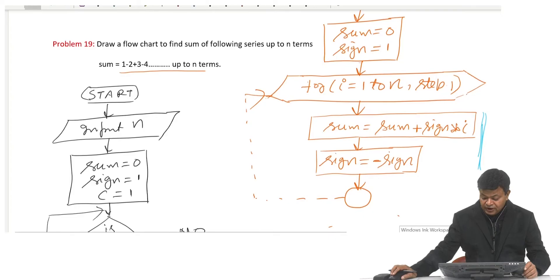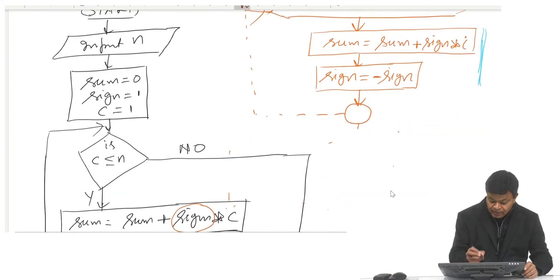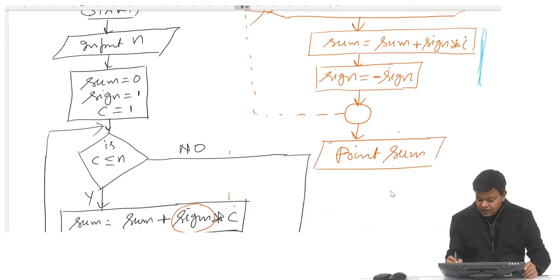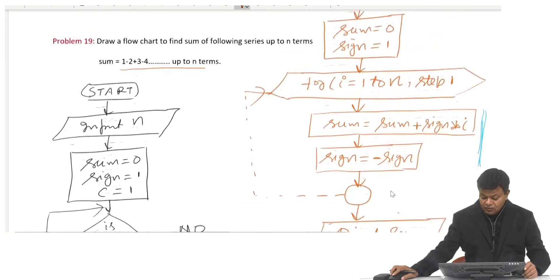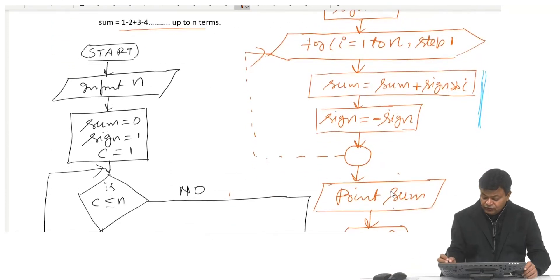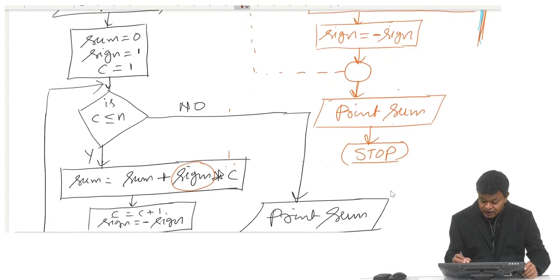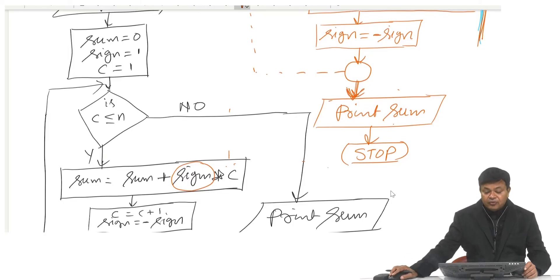Whenever i becomes greater than n I come out, meaning my work is done. Then I print the value of the final sum and stop.